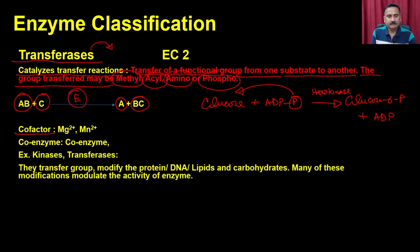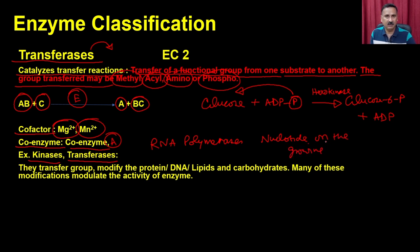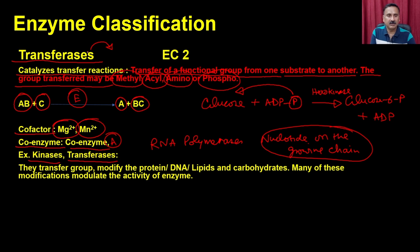Cofactors for transferases include magnesium and manganese. In some cases coenzymes are used — for example, Coenzyme A participates in acyl transferases. Examples of transferases include kinases, and some RNA polymerases, since RNA polymerase transfers nucleotides onto the growing RNA chain. Transferases transfer groups onto proteins, DNA, lipids, and carbohydrates.